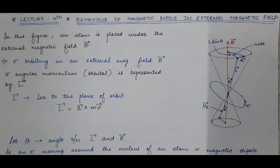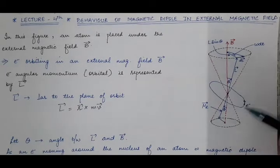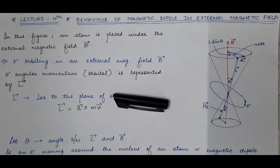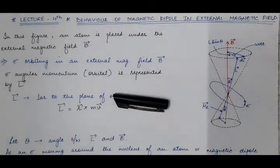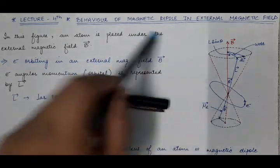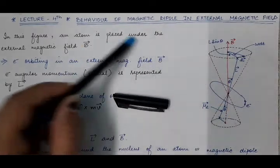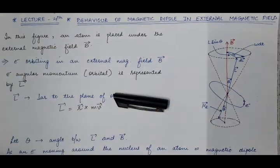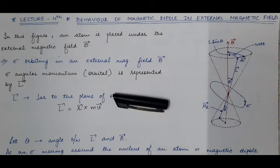The direction of the orbital angular momentum vector is perpendicular to the plane in which the electron is moving. Suppose this is the XY plane in which the electron is moving — the electron is revolving around the nucleus in this plane. Then the direction of L vector will be perpendicular to the plane of paper, pointing out.